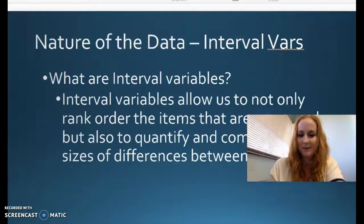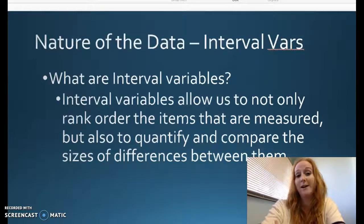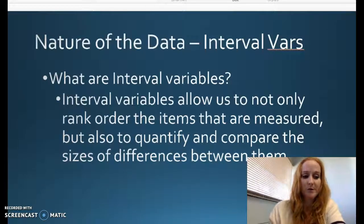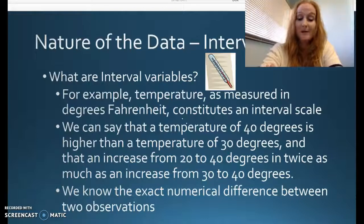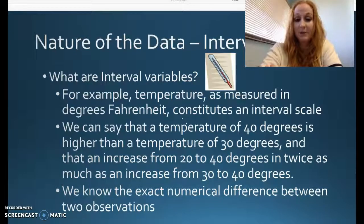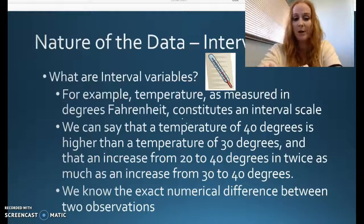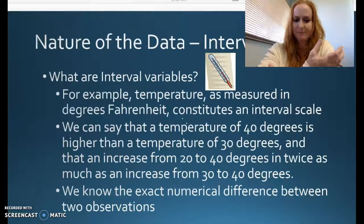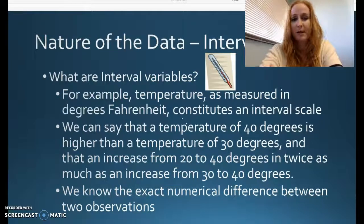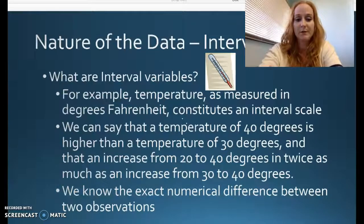Let's jump into interval. Interval variables are numbers. We can rank things. We can know what groups you're in, but we can quantify stuff, compare the sizes of the differences between them. Here's a famous example, temperature. Interval variables like temperature can be measured in degrees Fahrenheit and constitutes an interval scale. We can say that a temperature of 40 degrees is higher than a temperature of 30 degrees. And then an increase from 20 to 40 degrees is twice as much as an increase from 30 to 40. We know there's exactly a 10 degree difference between 30 and 40, and we can feel it. We can quantify the difference between those two.